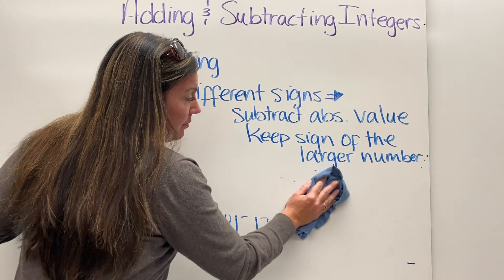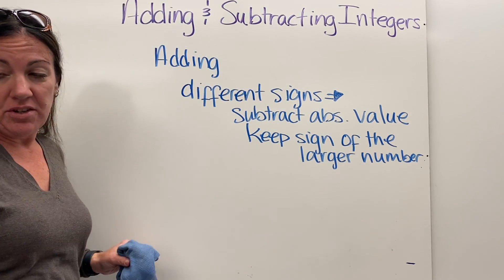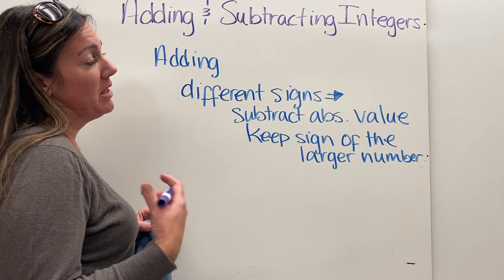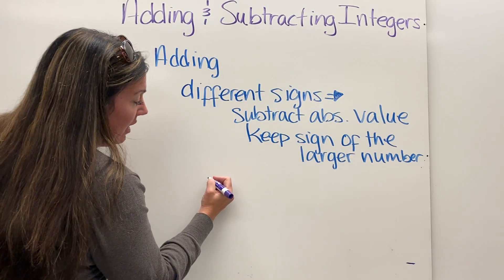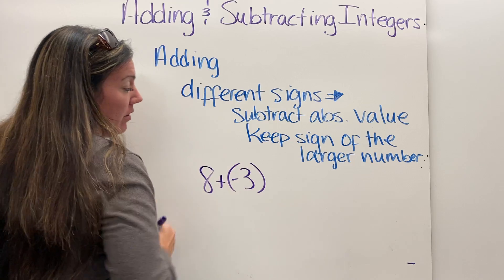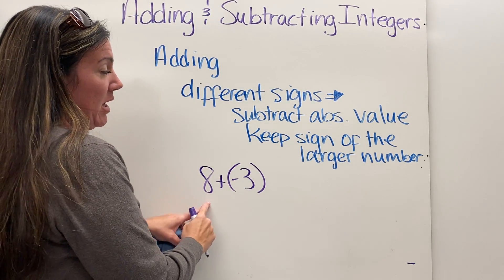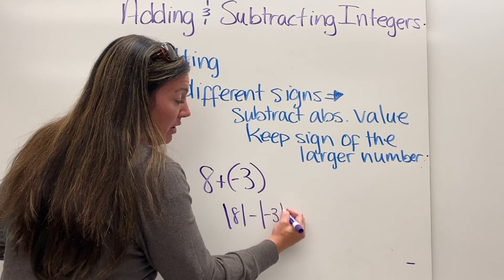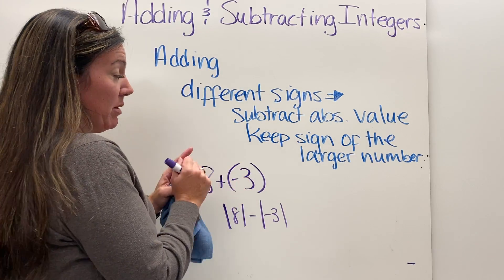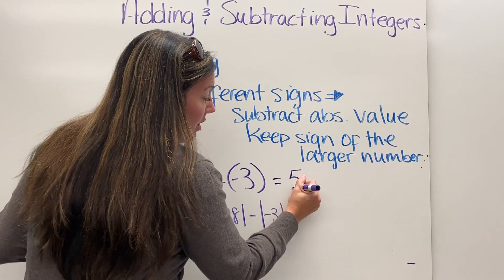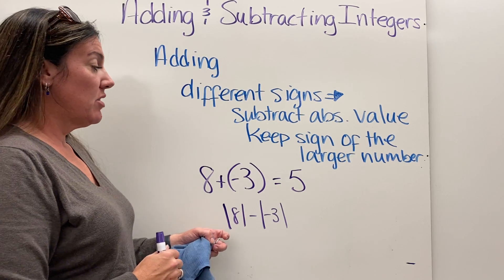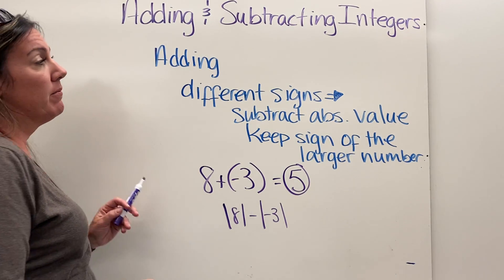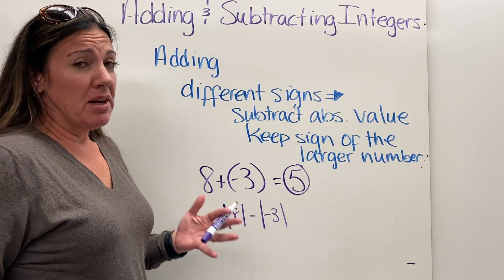When we add integers with different signs, we subtract their absolute values and keep the sign of the larger number. Here I have eight plus negative three. The absolute value of eight is eight, minus the absolute value of negative three which is three — eight minus three is five. The larger number is eight, which is positive, so my answer stays positive: five.